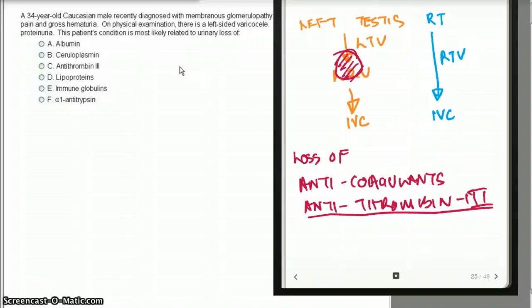Antithrombin-3 is responsible for preventing thrombotic and thromboembolic complications of nephrotic syndrome. Renal vein thrombosis can be a manifestation of the hypercoagulable state. Once we lose antithrombin-3, there is nothing there to really stop the thrombin. The thrombin is going to hypercoagulate, and the chances of hypercoagulating the left side are more than the right side.